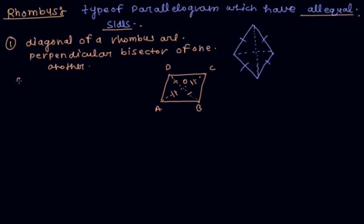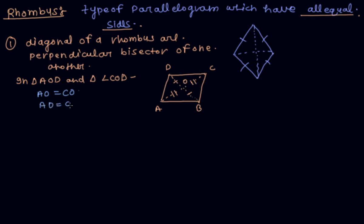Now in triangle AOD and triangle COD: AO equals CO because in a parallelogram the two diagonals bisect each other. And AD equals CD because in a rhombus all sides are equal.